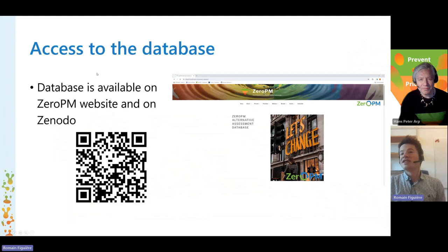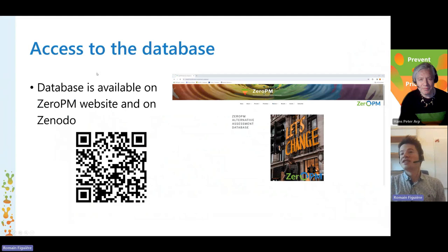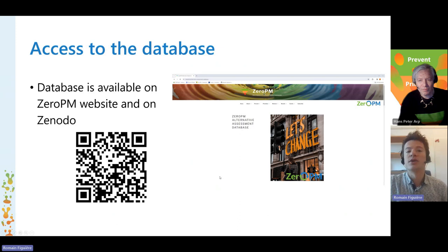First off, to access the database, you can access it on the Zero PM website under results and the Zero PM alternative assessment database. That's the webpage here. And it's also accessible on Zenodo — you can scan this QR code over here.